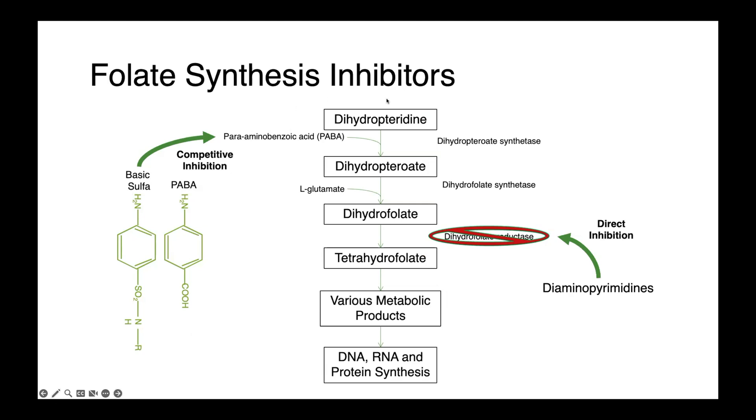In this figure, what you can see are all of the different steps in the production of folate that happen in a bacterial cell. Folate, of course, being required for nucleic acid synthesis, ultimately DNA, RNA, and protein synthesis. So the basic sulfa structure looks very similar to PABA, and dihydropteroate synthetase can't always tell the difference. So it will incorporate sulfa accidentally, leading to an inactive intermediary, and shutting down the pathway.